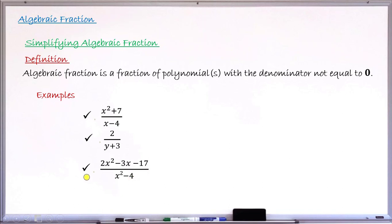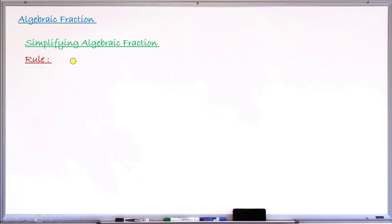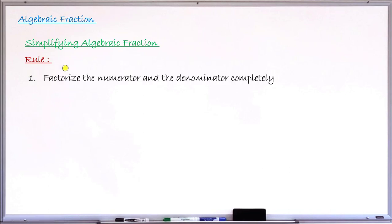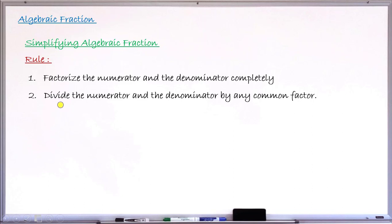Now let's learn how to simplify algebraic fractions. There are guidelines, rules, and a step-by-step process to follow. Step one: factorize both the numerator and the denominator completely. If either or both are factorizable, do the factorization completely. Step two: divide the numerator and the denominator by the common factor. After factorizing in step one, if there are common factors between the numerator and denominator, divide by that common factor. If there is no common factor, leave it as it is.